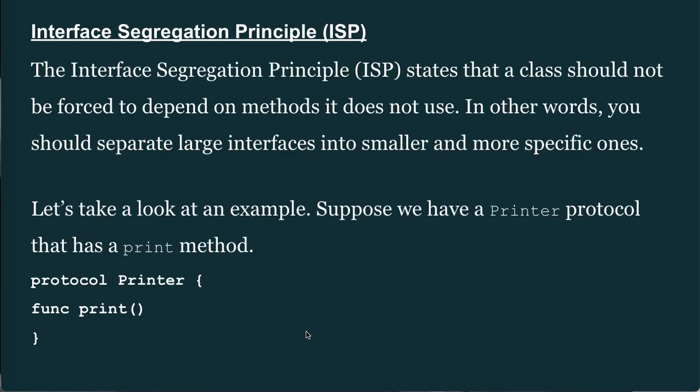Moving on to the Interface Segregation Principle (ISP). ISP states that a class should not be forced to depend on methods it does not use. In other words, you should separate large interfaces into smaller, more specific ones. For example, suppose we have a Printer protocol with a print method: protocol Printer { func print() }.